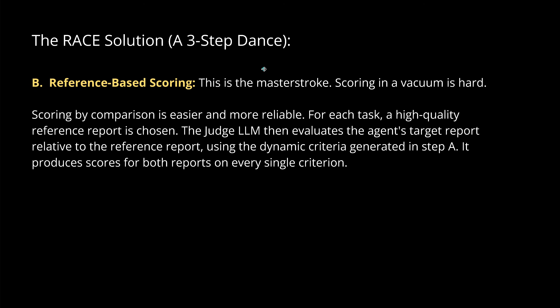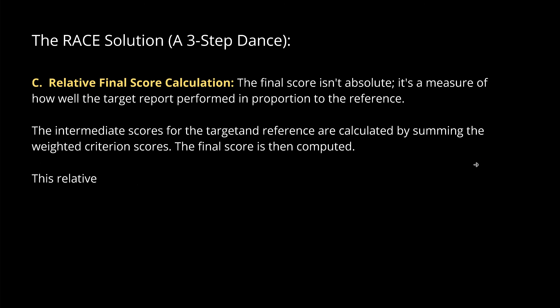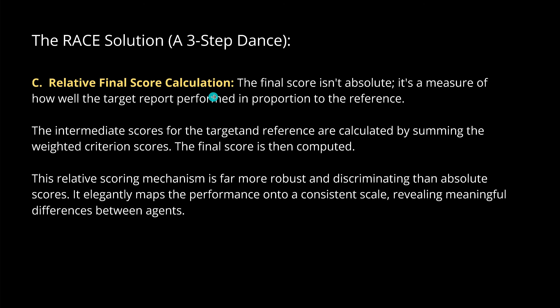The second step in RACE is reference-based scoring — similar to GRPO (Group Relative Policy Optimization), where you don't go for one absolute target but use group-relative evaluation. You look at a reference report using the dynamic criteria generated in step A, then produce scores for both reports on every single criterion. This gives you a domain-specific relative best-paper benchmark, and the final score is a measure of how well the target report performed relative to the reference.